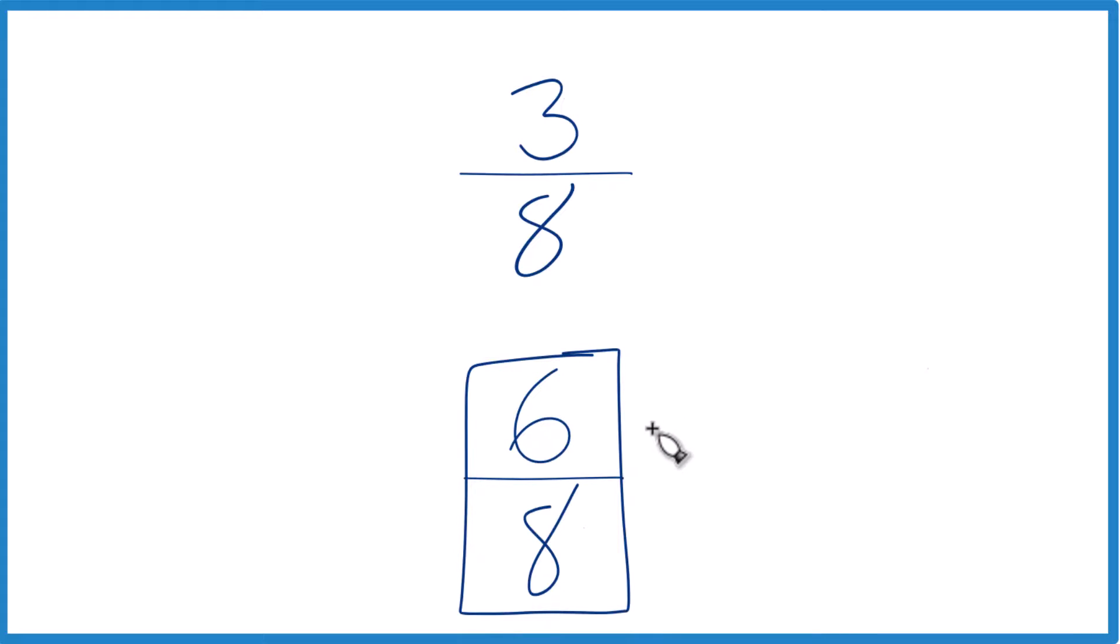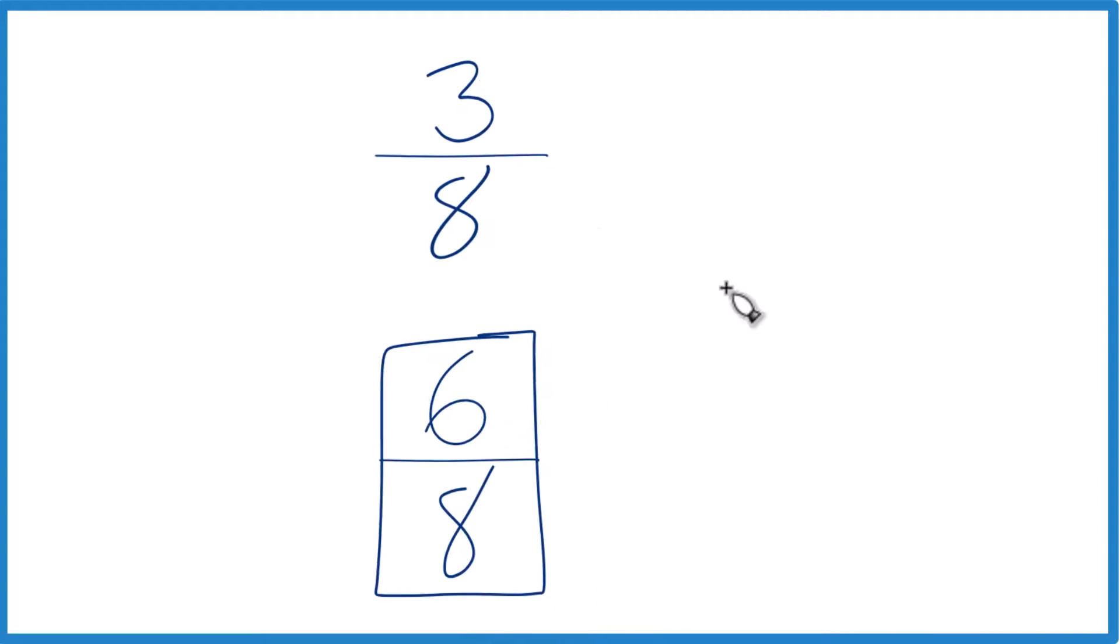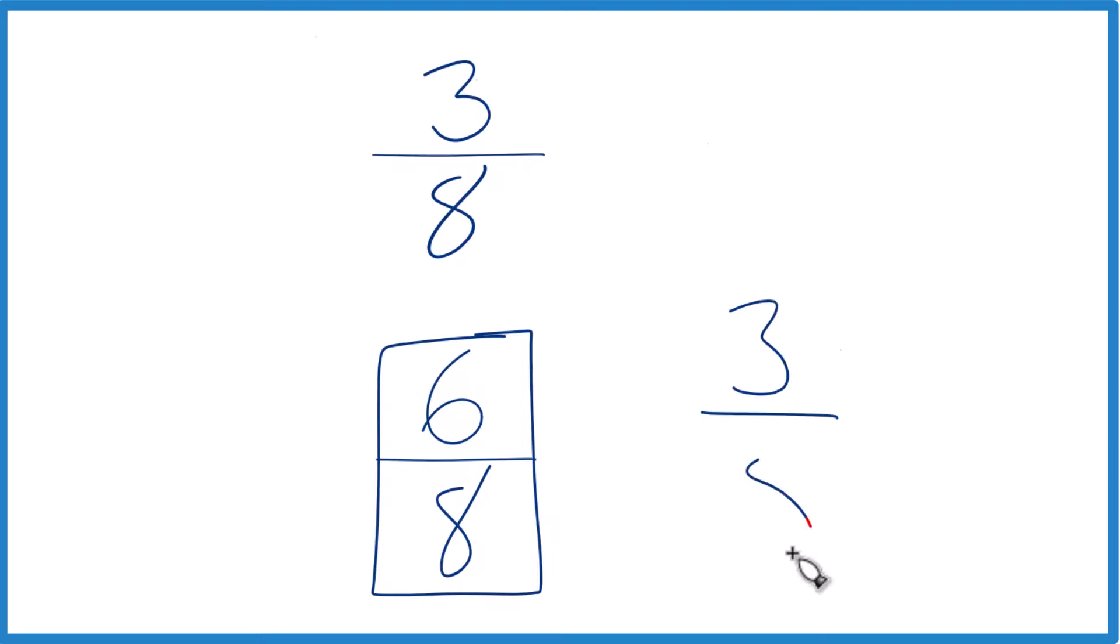And if you wanted to know by how much, 6 minus 3, that gives us 3, so 3 eighths. 6 eighths is 3 eighths larger than 3 eighths. That means if you add 3 eighths plus 3 eighths, you would get 6 eighths.